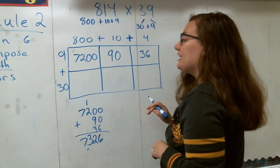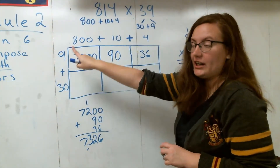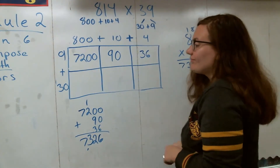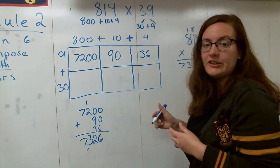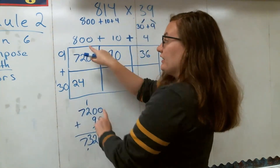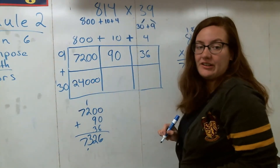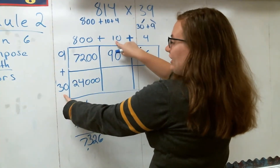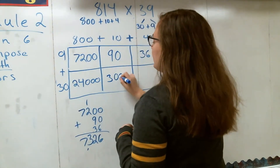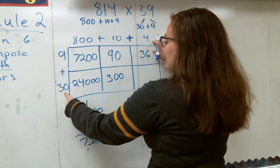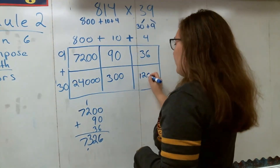Now let's move back to our area model and multiply 30 by 814. Let's start with 30 times 800: I think of this as 3 times 8, which is 24, and then add three zeros to get 24,000. Then 30 times 10: I think of that as 3 times 1, which is 3, and add two zeros to get 300. Finally, 30 times 4: 3 times 4 is 12, and I add one zero to get 120.